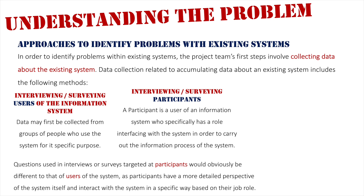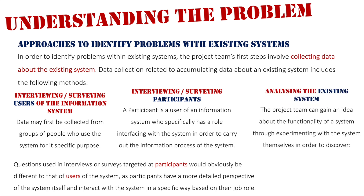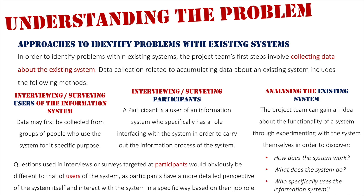The final area of data the project team would want to gather comes from the system itself and their interaction with it. The project team can gain an idea about the functionality of a system by experimenting with it directly, and also by observing users and participants interacting with the system. Essentially, what they're trying to find out through observing and experimenting is how the existing system works, what it actually does, and who uses it — who is its target audience.